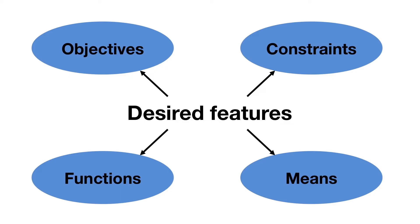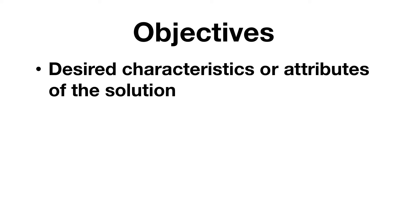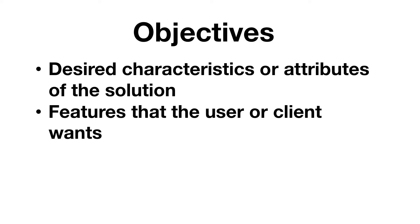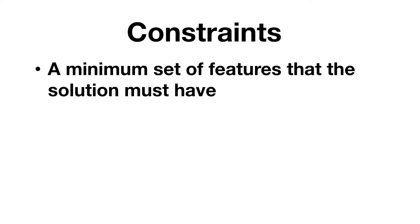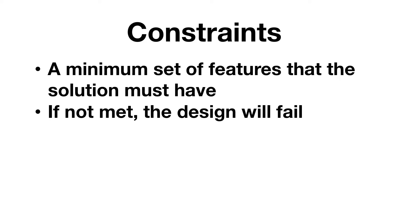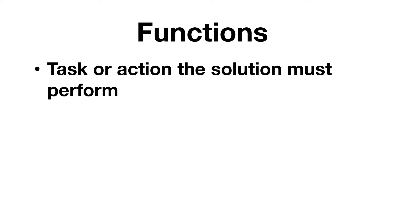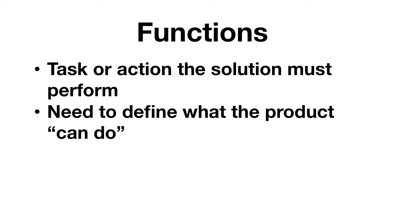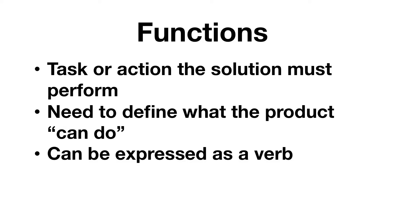Let's define those four now. Objectives are desired characteristics or attributes of a solution — these are features that the users or the client wants. Constraints are a minimum set of features that the solution must have. If a constraint is not met, the design will fail. A common example of constraints are meeting all applicable regulatory or environmental laws. Functions are a task or an action that the solution must perform — it needs to define what the product can do.